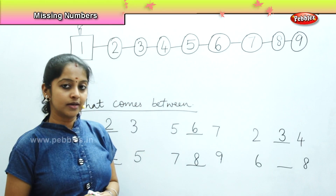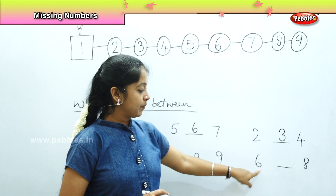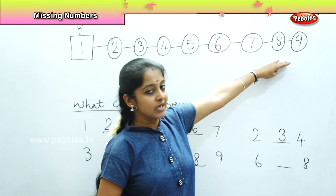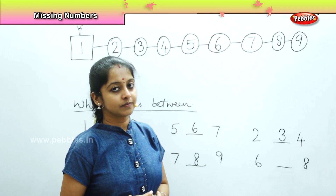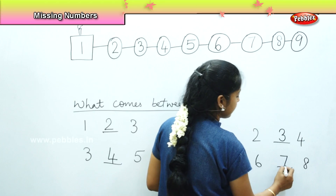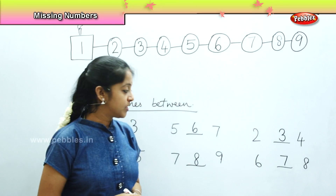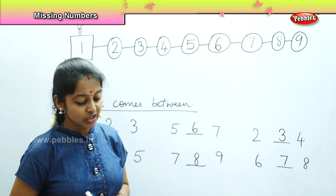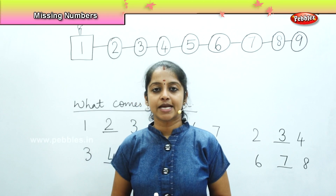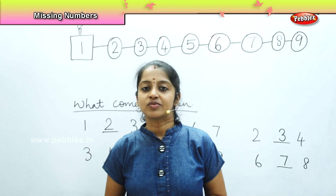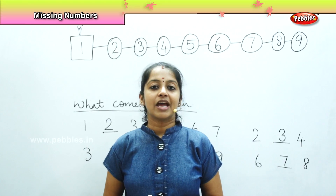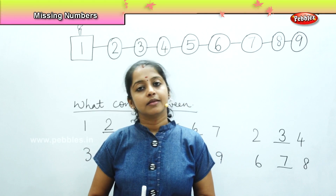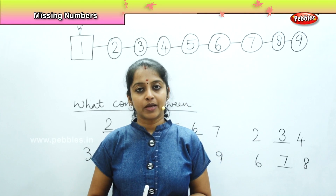And the last one: number 6 is there and number 8 is there. So between bogey number 6 and bogey number 8, what is the number which is coming? It is number 7. So the number which comes in between 6 and 8 is number 7. So children, was it interesting to learn this exercise? In this game we have learnt how to find out a number which comes in between two numbers.